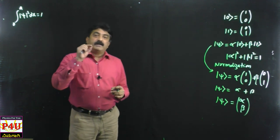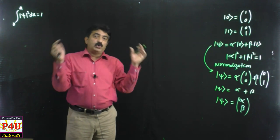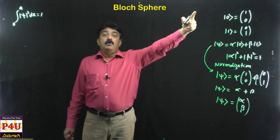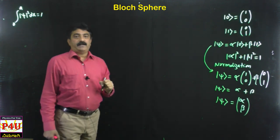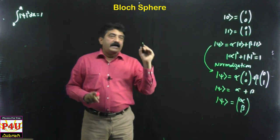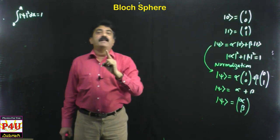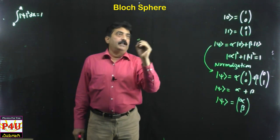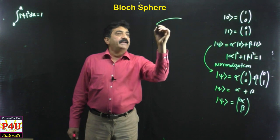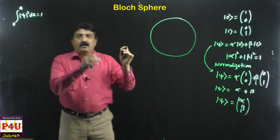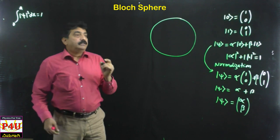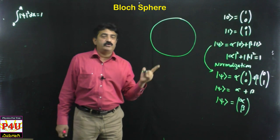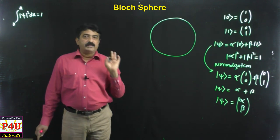This qubit can be represented graphically in a diagram called the Bloch sphere. The Bloch sphere is actually a sphere — it is a sphere like our earth — with unit radius. That is the speciality: the radius of this sphere is 1.